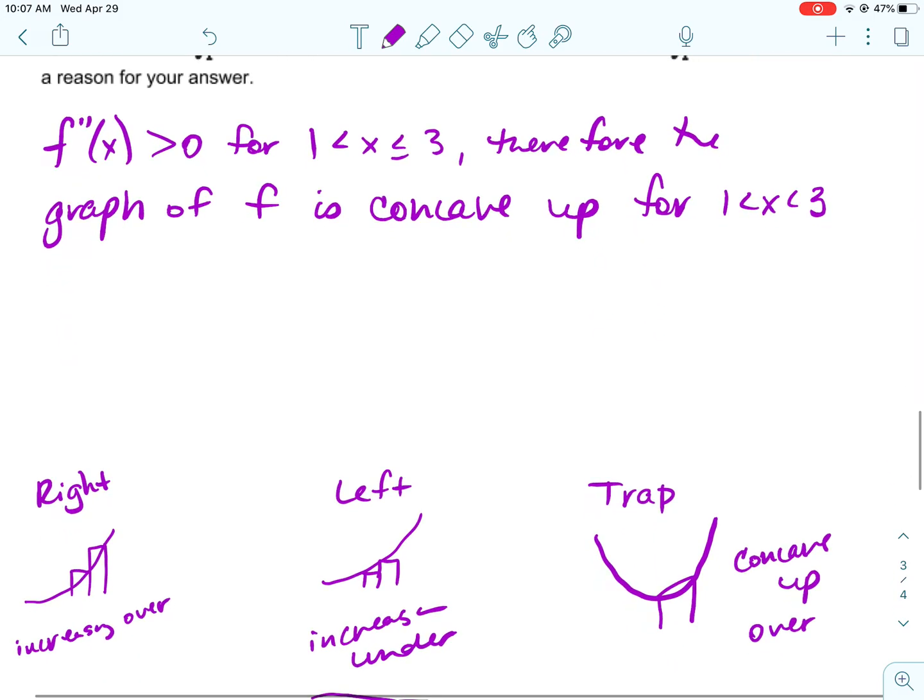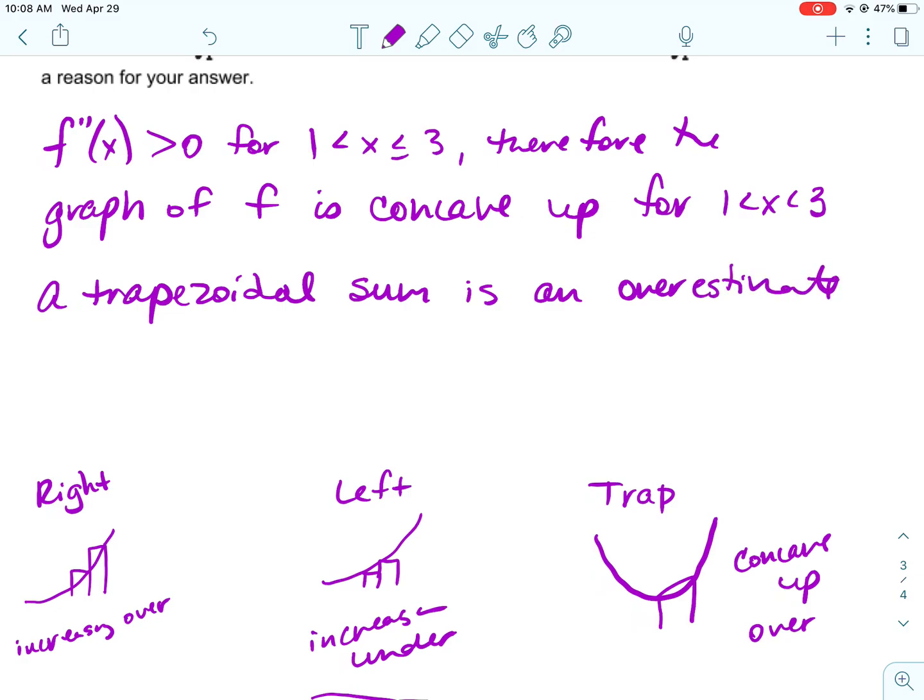Therefore, the graph of F is concave up. And concave up, we just saw a trapezoidal sum is an overestimate.